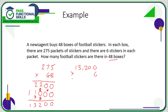If there are 6 stickers per pack, we just need to multiply 13,200 by 6 to get the total number of stickers. 6 times 0 is 0, 6 times 0 is 0, 2 sixes are 12 so 2 carry 1, 3 sixes are 18 plus 1 is 19 so 9 carry 1, and 1 times 6 is 6 plus 1 is 7. So in total there are 79,200 stickers.